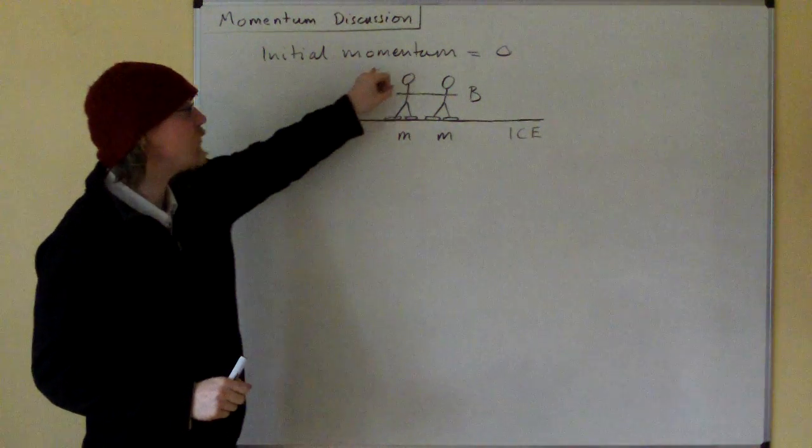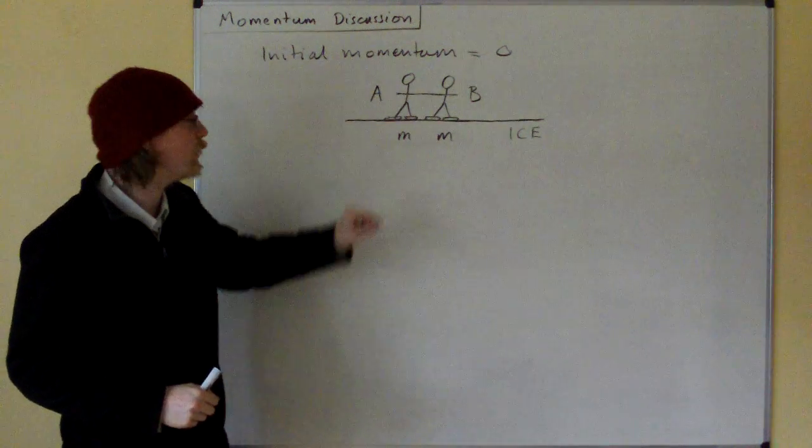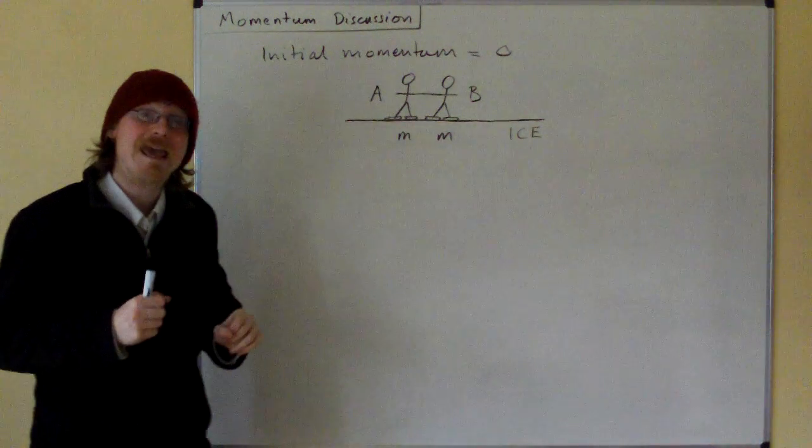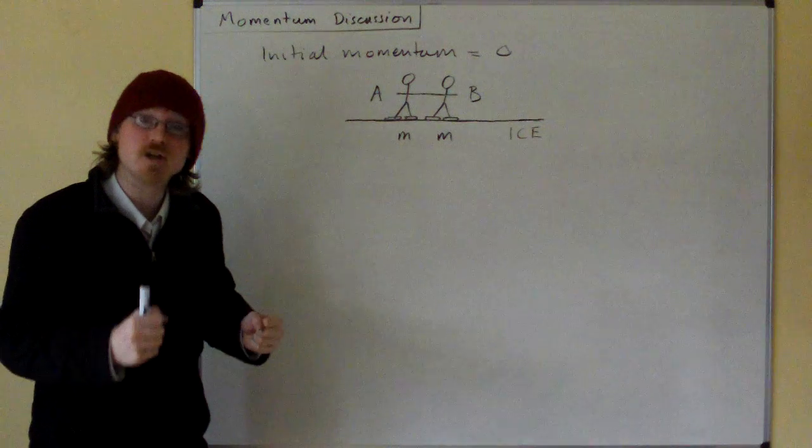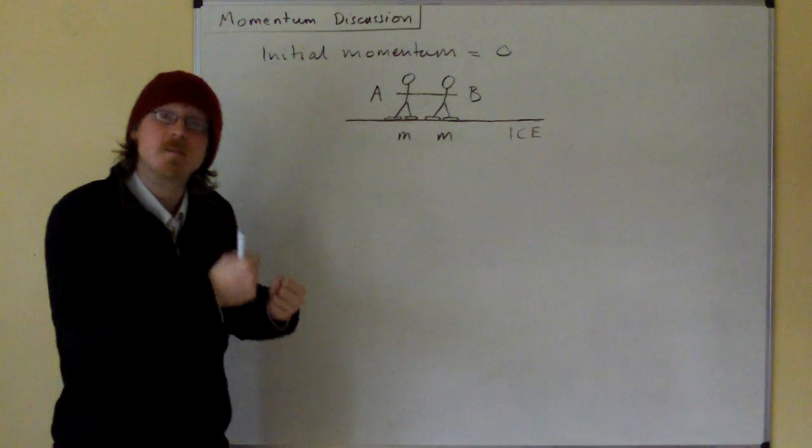Now, the initial momentum is zero. They've got the same mass because they're twins. They've both got a mass of m, but they have no velocity, so the momentum at the beginning is zero.